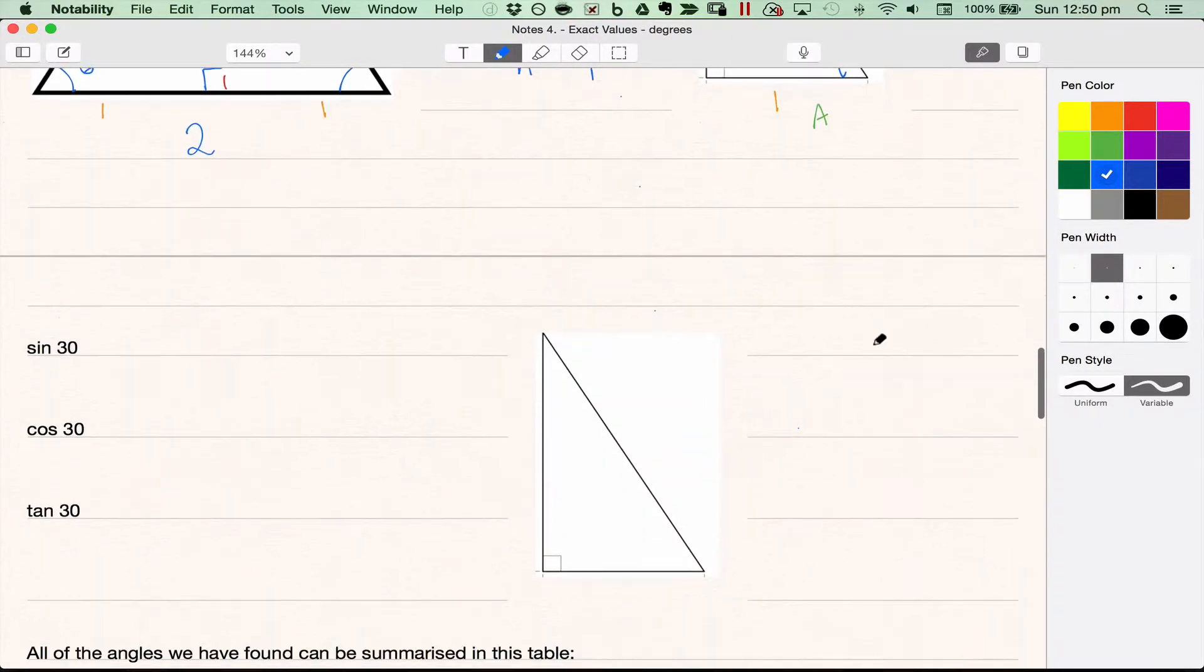So I've copied that one here. I'll quickly label it for you: root 3, 2, and 1. This time this is the 30 degrees. This side, hypotenuse, opposite, and adjacent.